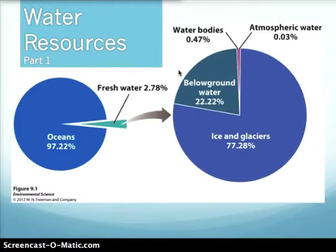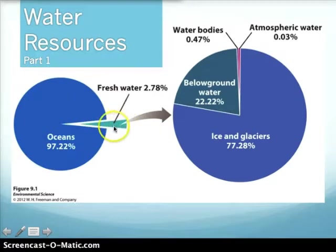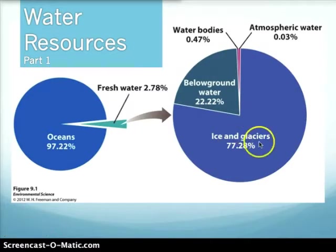You probably realize that water is essential to living things, but you might not realize how little of it humans have to use. Even though about two-thirds of the Earth's surface is covered with water, most of that is in the oceans, and only a little less than three percent is fresh water. About a quarter of that fresh water is underground, and most of the above-ground water is frozen and locked up as ice in glaciers and in the polar regions.